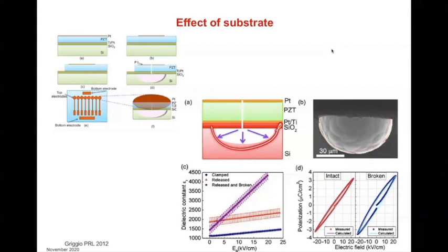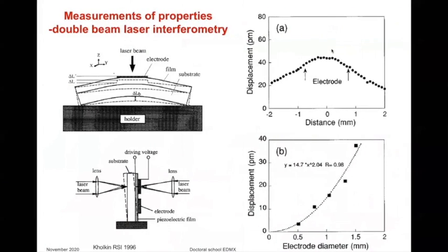There are different types of stresses: stresses produced by the rigid substrate preventing the film from deforming when you apply a measuring field, and stresses resulting from thermal expansion mismatch between film and substrate that clamp domain walls and make the film less susceptible to changes in dimension. Both can be alleviated by releasing the film from the substrate or drilling a hole below it.